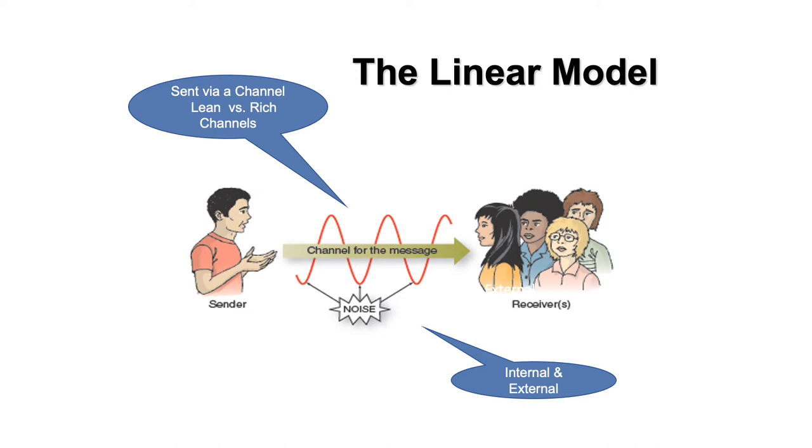And they all serve a particular purpose. So we want to look at the message that we're sending. Is it complex and detailed, or is it a simple message? And the channel you use to send that message does make a difference. So you're introduced to lean and rich channels. This ties back into video one where we talked about nonverbal and verbal symbols or codes. All of our messages are made up of those things. And does the channel allow you to use a lot of those nonverbal, verbal? That would be a rich channel. Or are you limited in your nonverbal or verbal?